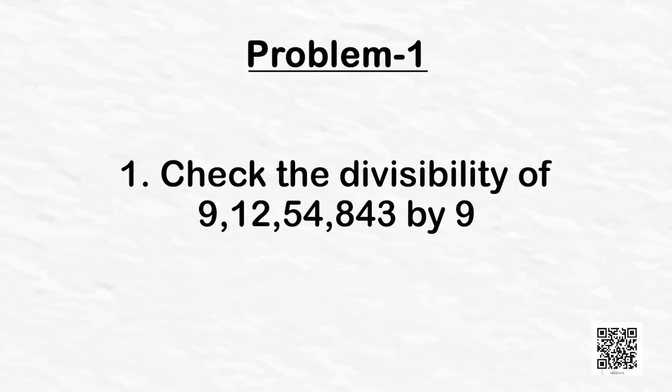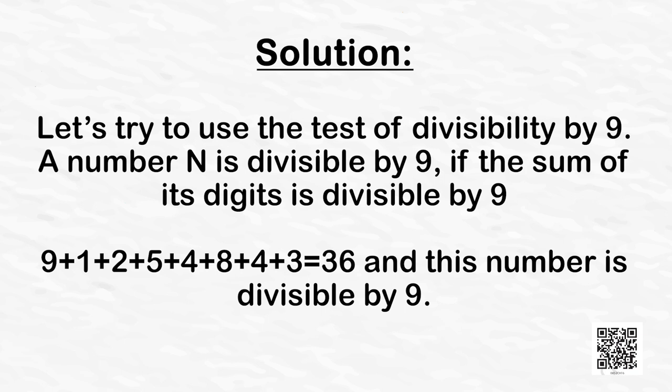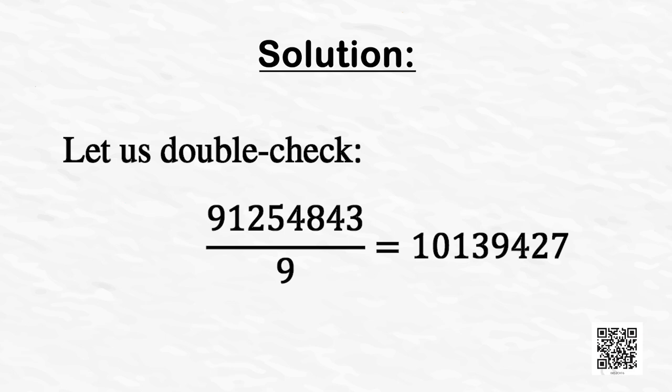Let's solve a problem: check the divisibility of 9,12,54,843 by 9. Using the test of divisibility by 9, we find the sum of its digits: 9 + 1 + 2 + 5 + 4 + 8 + 4 + 3 = 36, and this number is divisible by 9. As a double check, dividing 9,12,54,843 by 9 gives 1,01,39,427 exactly, confirming the division is exact.